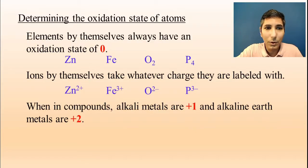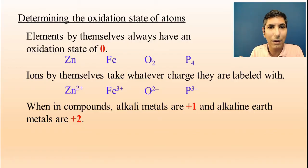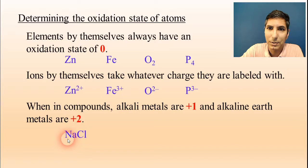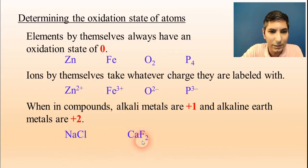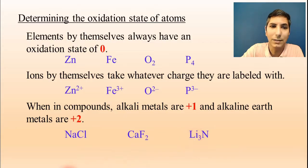Generally speaking, when looking at compounds, alkali metals — those elements in group one, the far left-hand side of the table — are positive one. And alkaline earth metals are positive two, the ones in the second column. For example, sodium chloride: sodium is an alkali metal, so it's going to have an oxidation state of plus one. Calcium fluoride: calcium is an alkaline earth metal, so it has a charge of positive two. Lithium nitride: lithium is an alkali metal, so it's got a positive one charge.